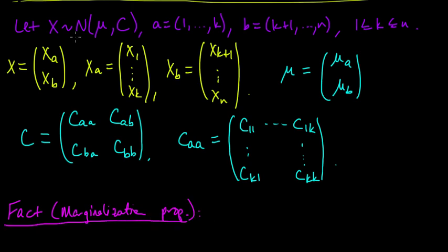And the result is actually much simpler to state and prove even than all this notation. So we have the following fact. Let's call it the marginalization property. And it says that under this situation, XA is multivariate normal with mean mu A and covariance CAA. The best possible thing you could hope for. And similarly, XB is also multivariate normal with mean mu B and covariance matrix CBB, this lower right block.